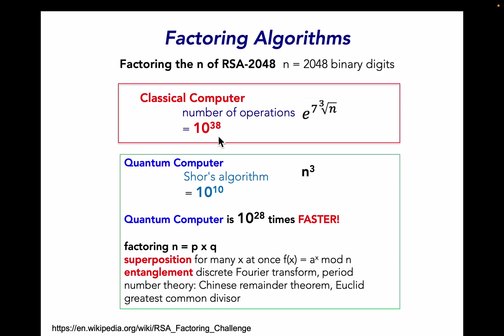For a current version of RSA using 2k bits, a classical computer would take 10 to the 38th operations to factor n into p and q. But a quantum computer running Shor's algorithm would be able to do that in 10 to the 10th operations or 10 to the 28th times faster. This is where that 10 to the 28th comes from. Shor's algorithm is able to factor n into p and q by using superposition, by creating a function of many values all at the same time. It then uses entanglement to create a discrete Fourier transform to figure out the period in that set of numbers. Once you know that period, you can use things from number theory to factor n into p and q.